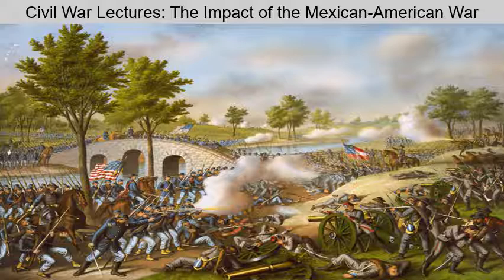Many in the North began to sense a slave power conspiracy. Wilmot's proposal absolutely angered Southerners, who believed any anti-slavery decision about the territory would threaten slavery everywhere. Despite fierce Southern opposition, a coalition of Northern Democrats and Whigs passed the Wilmot Proviso in the House of Representatives.